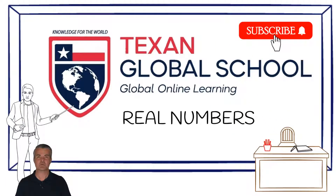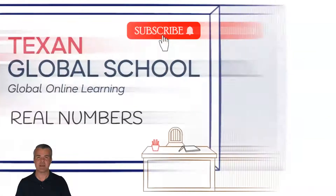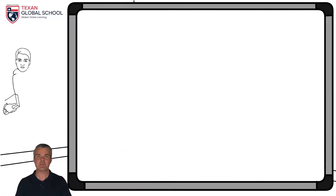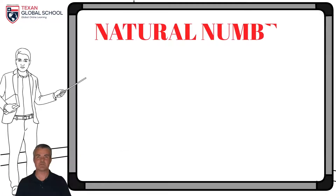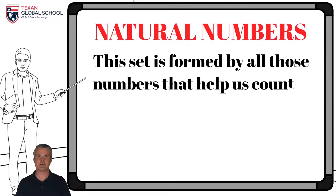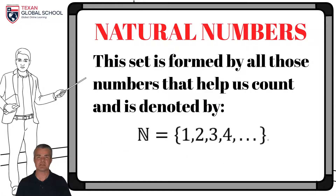We will start with the set of natural numbers. It is composed of all those numbers that help us count. This set is represented by the letter N. The elements are one, two, three, four, up to infinity, maintaining that sequence.